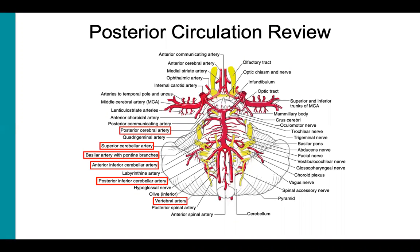The posterior circulation is supplied via the vertebral arteries. As described earlier, the vertebral arteries arise from the subclavian arteries and ascend through the transverse foramina of cervical vertebra C6 to C1, and then enter the foramen magnum. The vertebral arteries shown here will give off the posterior inferior cerebellar artery, or PICA, before converging to form the basilar artery on the ventral surface of the brainstem at the level of the pons.